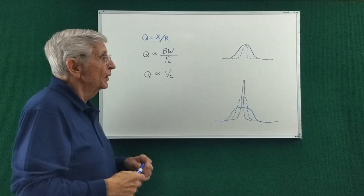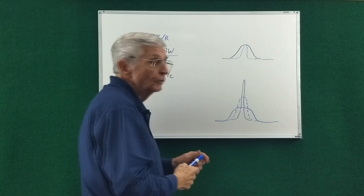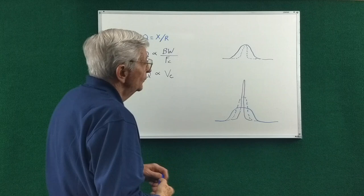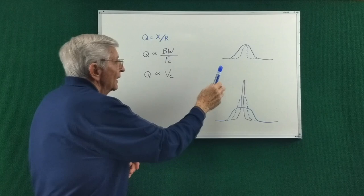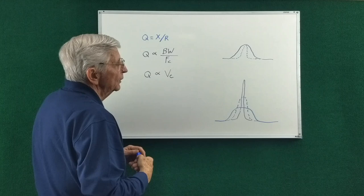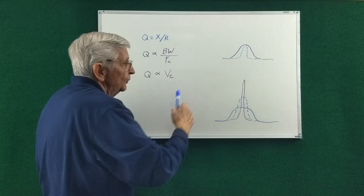So this purple curve here would be a low Q design, and the blue dotted curve would be a high Q design. Right away, you can see the tuning of a high Q circuit would be very critical compared to a low Q circuit.